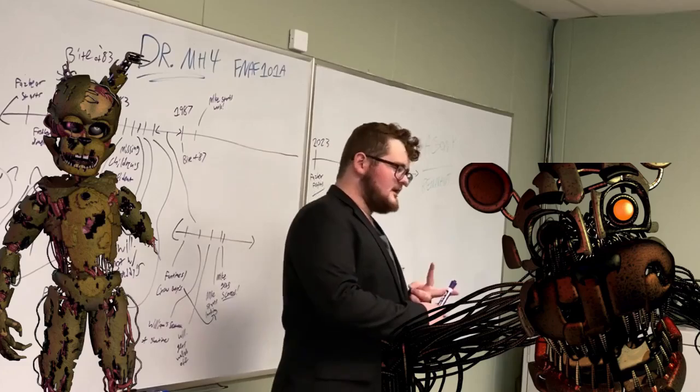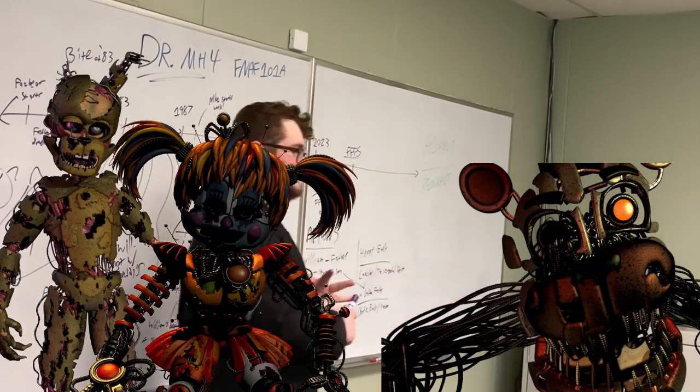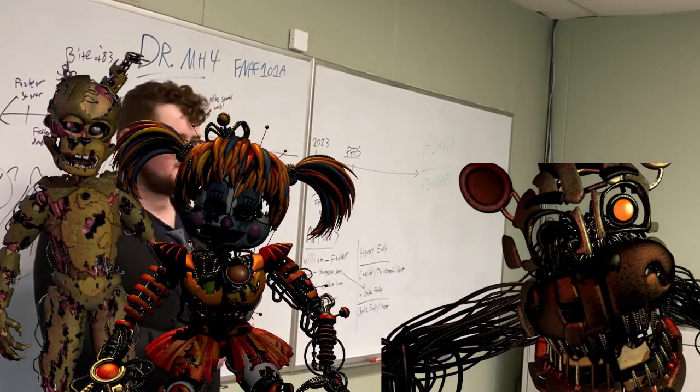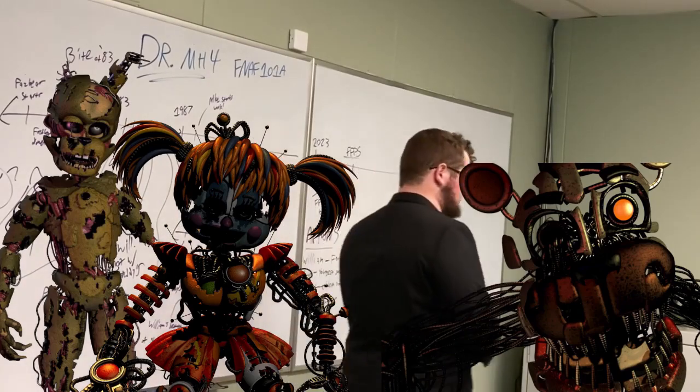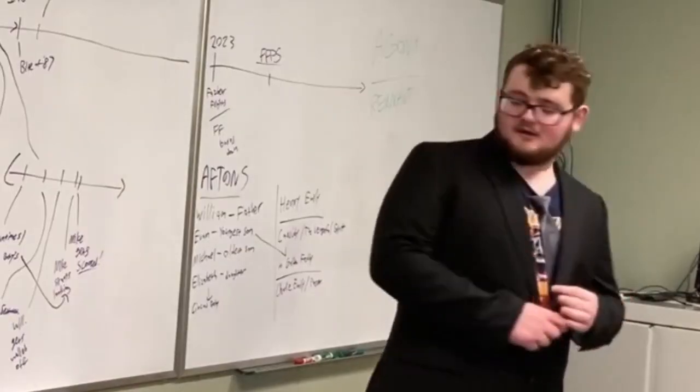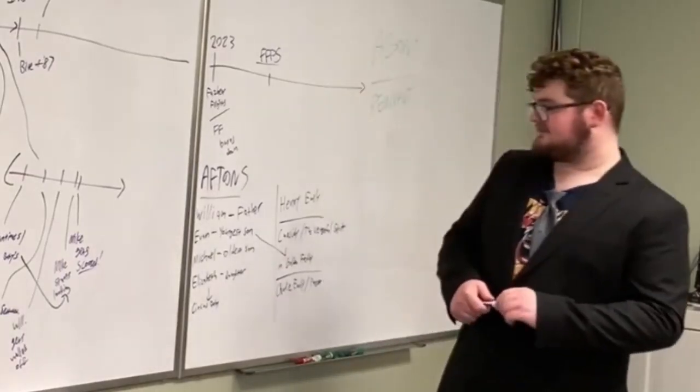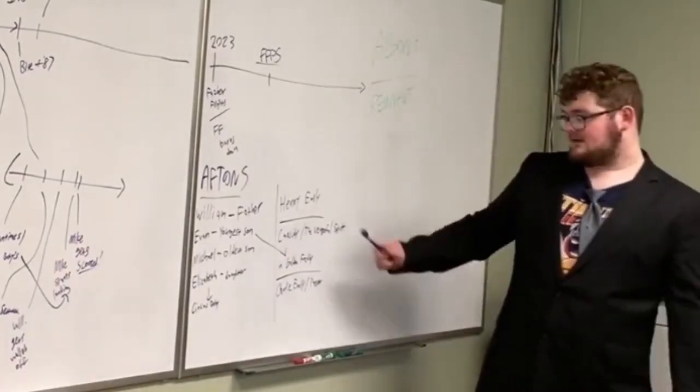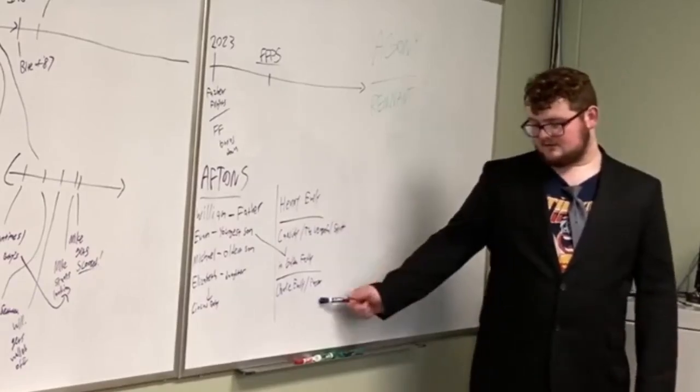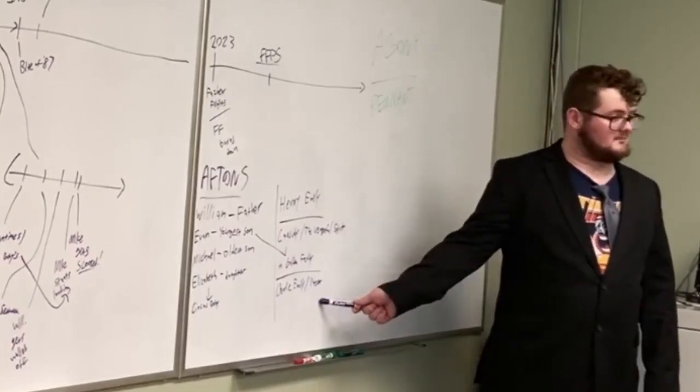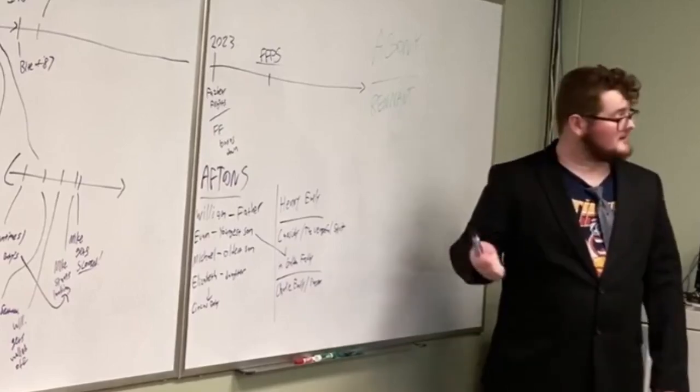And you have a new animatronic called Lefty. And Lefty was an animatronic specifically designed by Henry Emily to locate Charlie Emily, the puppet. And it seems he has succeeded. Because in certain scenes, you can see the body of the puppet inside of Lefty. So Lefty has succeeded in capturing Charlie and bringing her back.